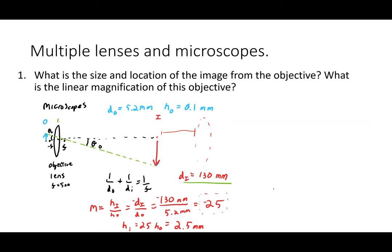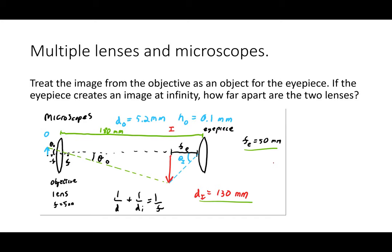The image from the first lens is 2.5 mm tall — 25 times the original 0.1 mm object. To view comfortably with relaxed eye muscles, the intermediate image must be at the focal length of the eyepiece. The spacing between the two lenses must be 130 mm plus the eyepiece focal length of 50 mm, giving a total barrel length of 180 mm. Real microscopes have a barrel adjuster to achieve this.